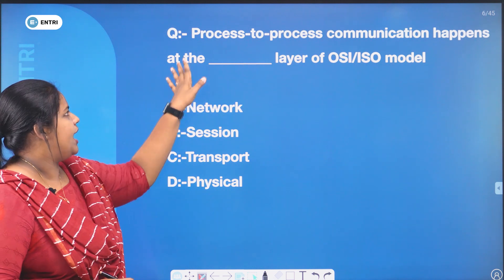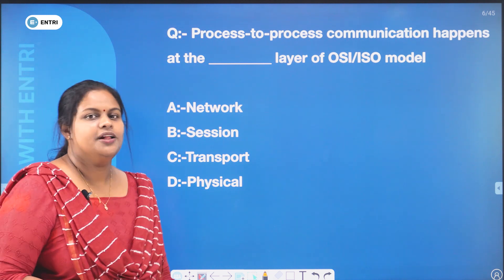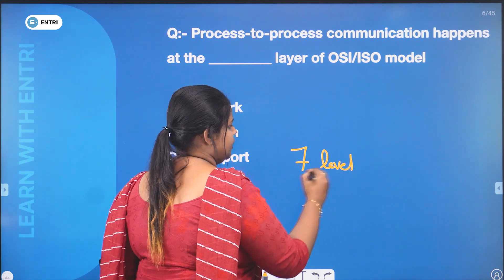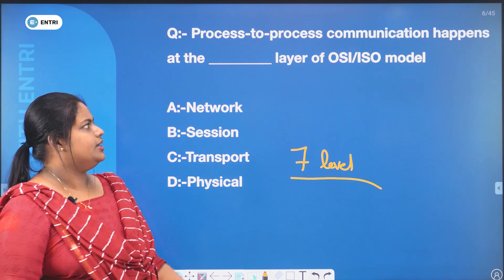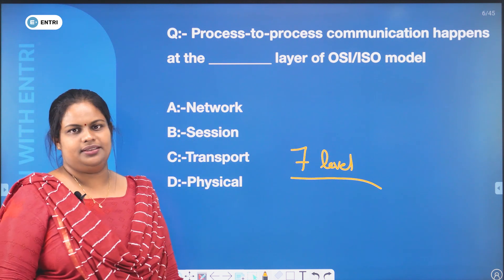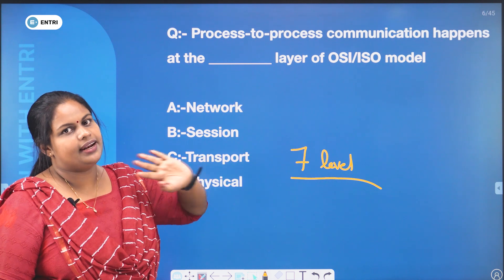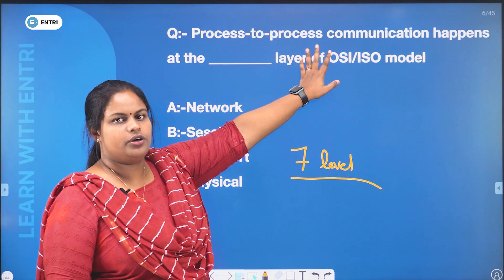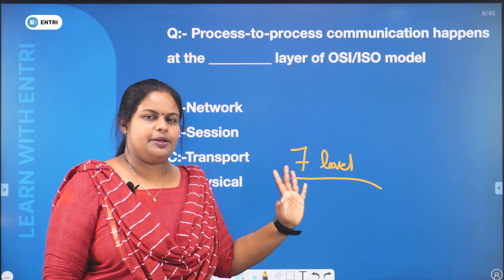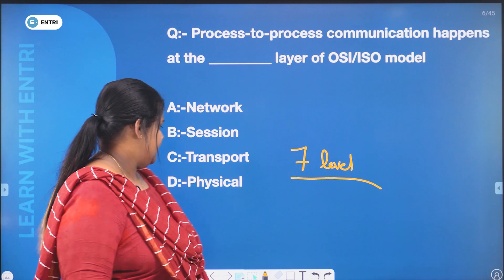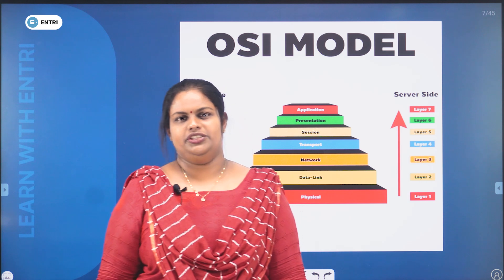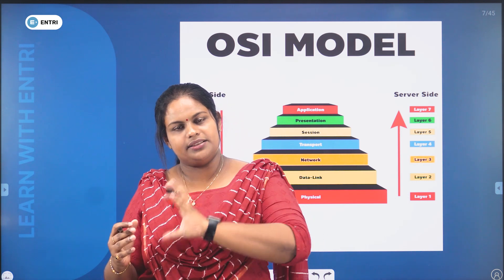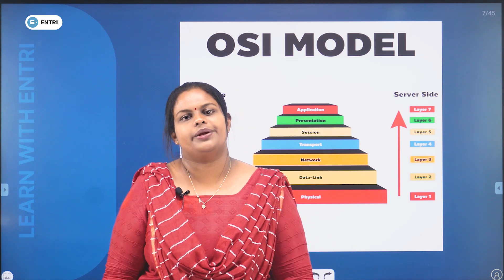The process-to-process communication happens at the dash layer of the OSI model. So, it is the OSI model. Let's take a look at the OSI model, a little bit of a representation of the OSI model.